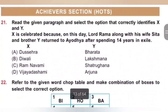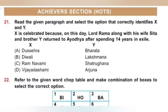Next section is the Achiever section. If you have any doubts, please pause this video and read the question 3 or 4 times. Question 21: Read the given paragraph — X is celebrated because on this day Lord Rama along with his wife Sita and brother Y returned to Ayodhya after spending 14 years in exile. Diwali is celebrated for this reason, and Y is Lakshmana. X is Diwali, Y is Lakshmana. Option B is the correct answer.